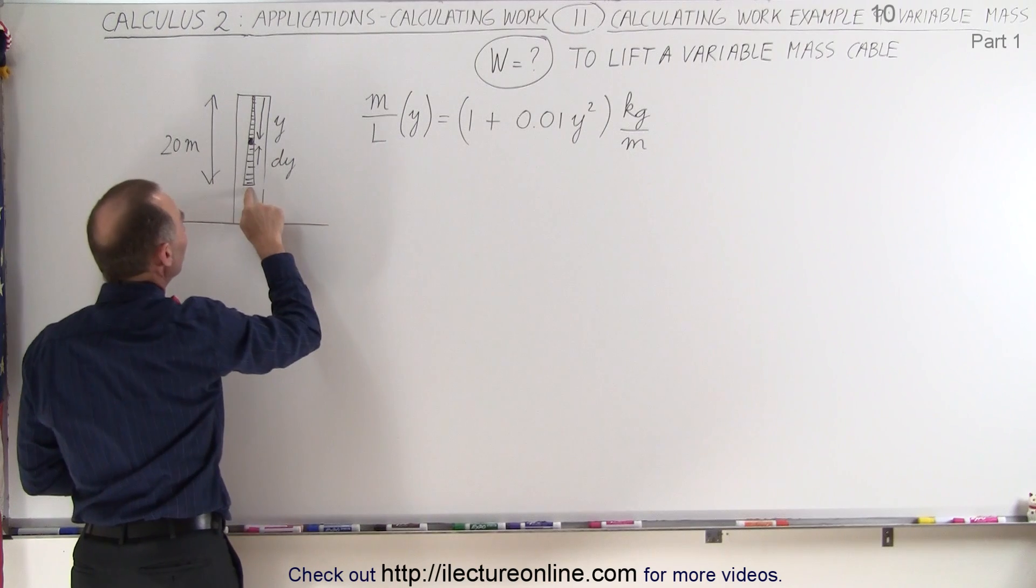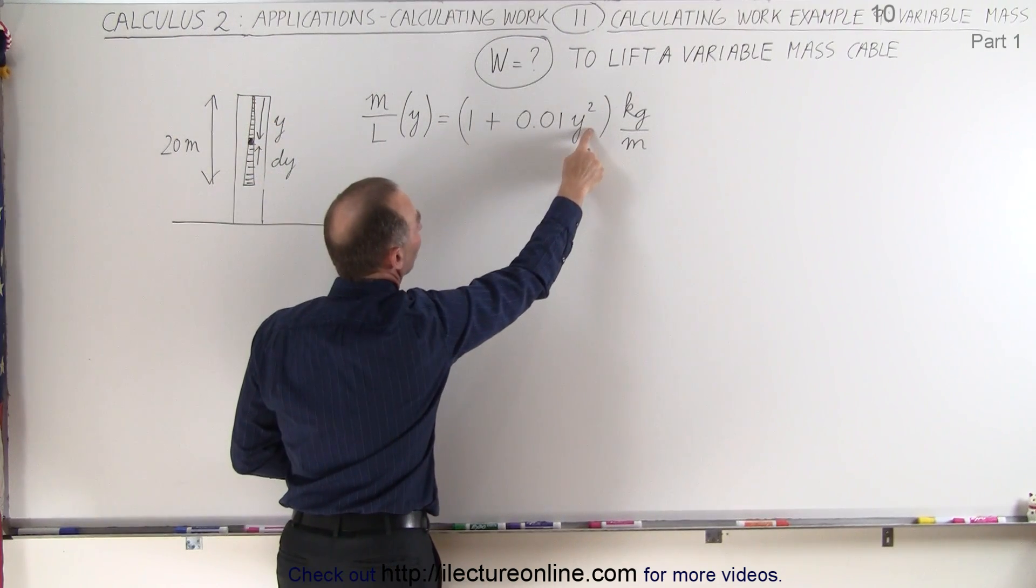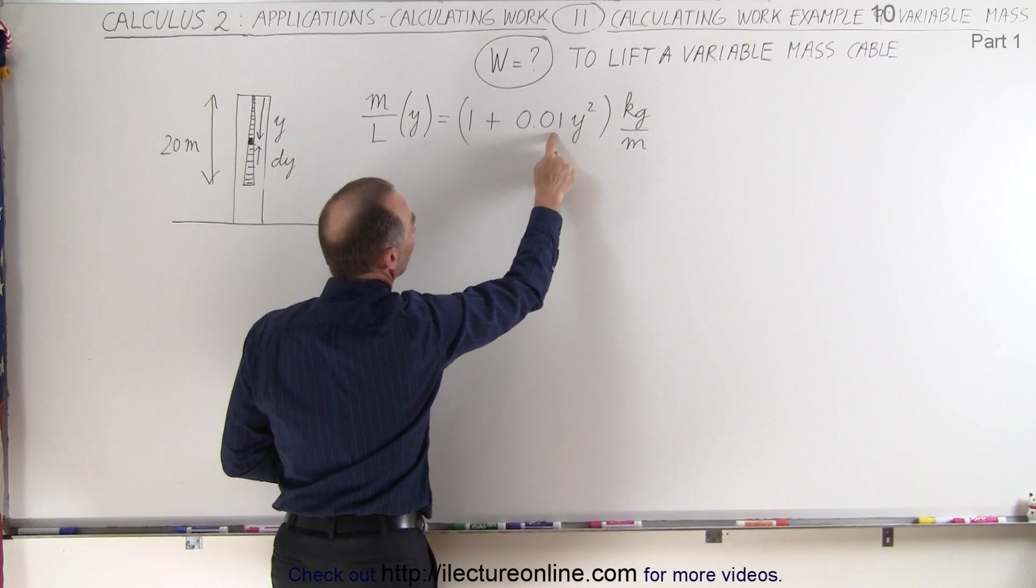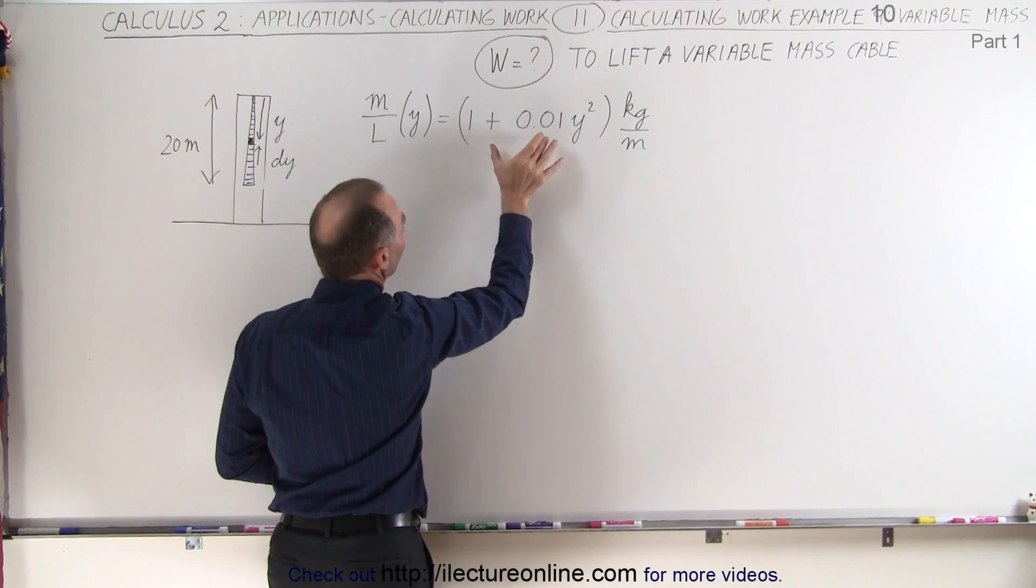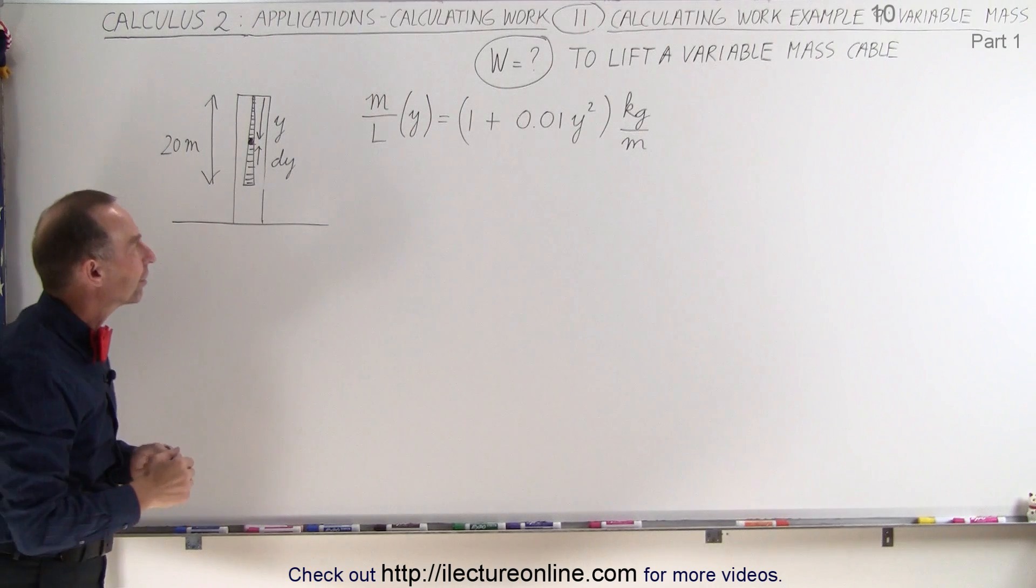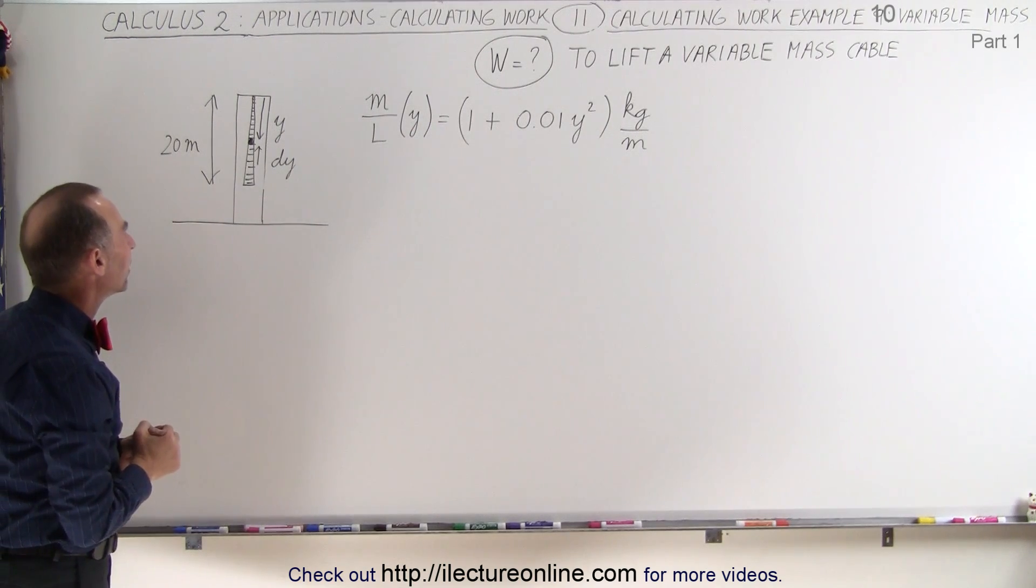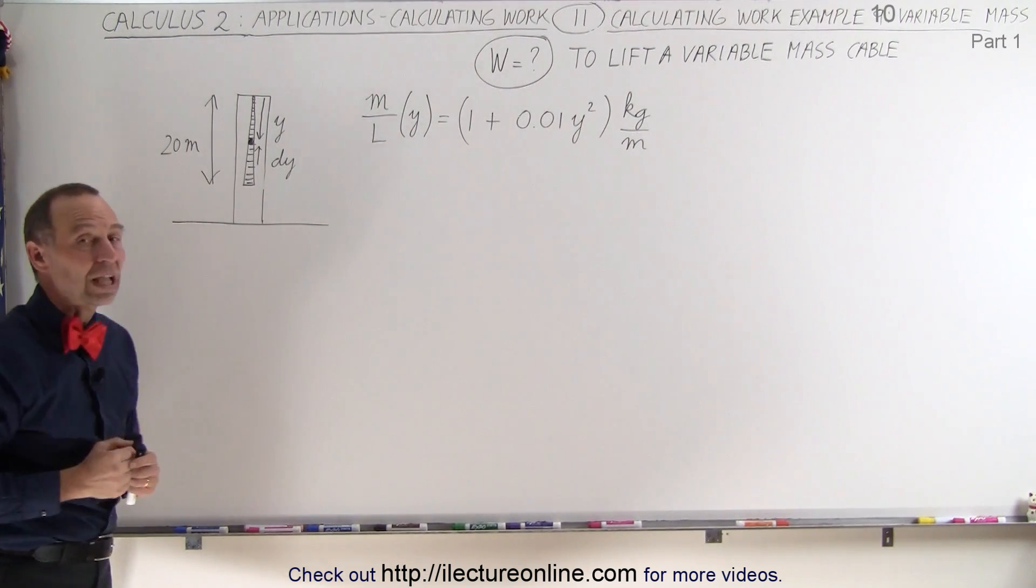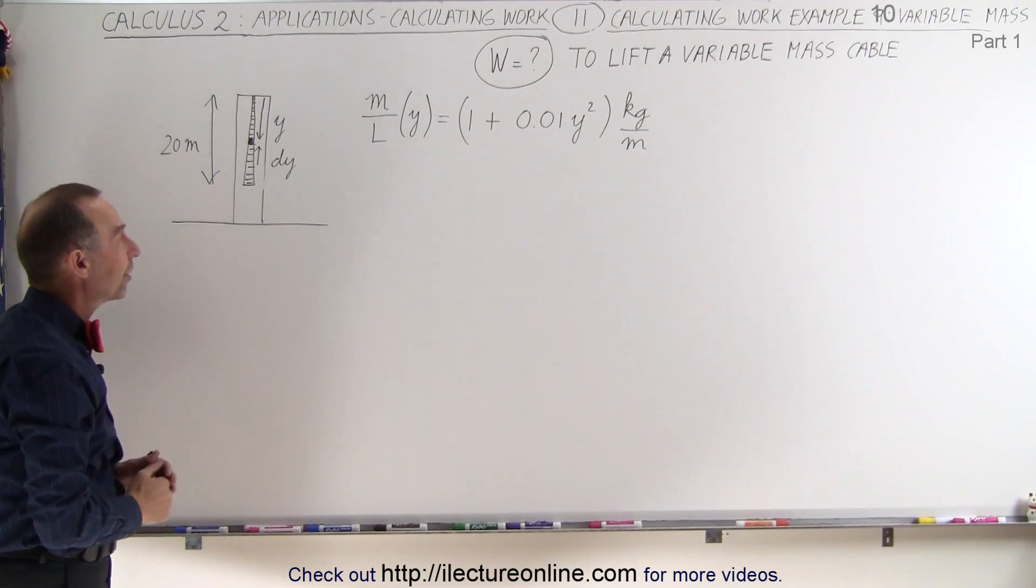And at the bottom, when y is 20, 20 squared is 400 times 0.01, which is then 4. 1 plus 4 is 5. So at the very bottom, the cable has a mass per unit length of 5 kilograms per meter. And it's not a linear change. So how do we solve this problem?